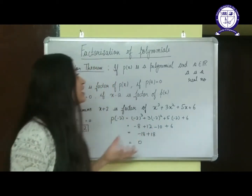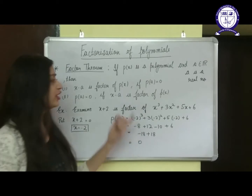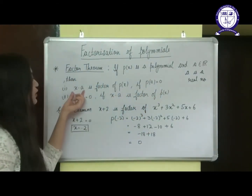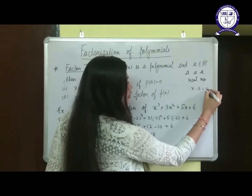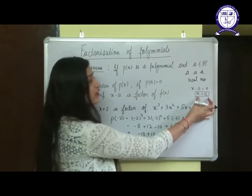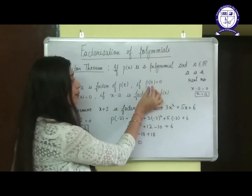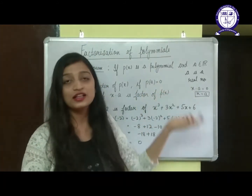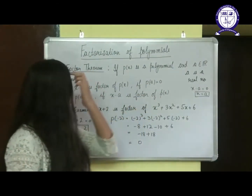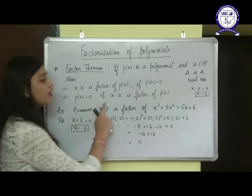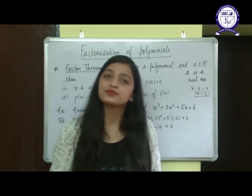Similarly, in polynomials, if P(x) is a polynomial and X minus A is a factor of P(x), then X minus A will be a factor if P(A) equals 0. That means if I put X minus A equals 0, I find X equals A, and putting this value in P(x) gives 0. By the remainder theorem, P(A) is nothing but the remainder, and if the remainder is 0, the divisor is perfectly dividing the dividend.